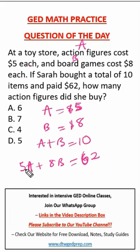So $5 times the total unknown of action figures plus $8 times the total unknown of board game, then when we add them up, it should give us $62. So we have like two equations here now that we can play around with, to give us our answer, we're asked to find how many action figures did she buy? So we're looking for A.